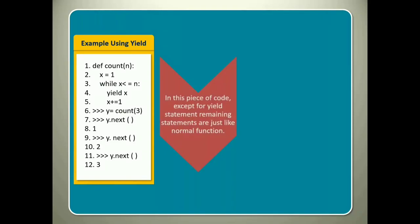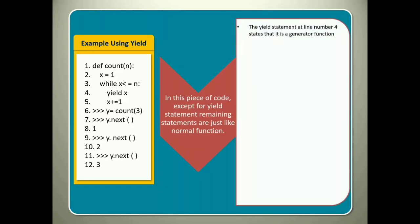In this piece of code, except for yield statement, remaining statements are just like normal function. The yield statement at line number 4 states that it is a generator function. Line number 6 calls the function. However, calling the function does not execute the function. Instead, it creates an instance of the function. Here, count function creates an object Y.